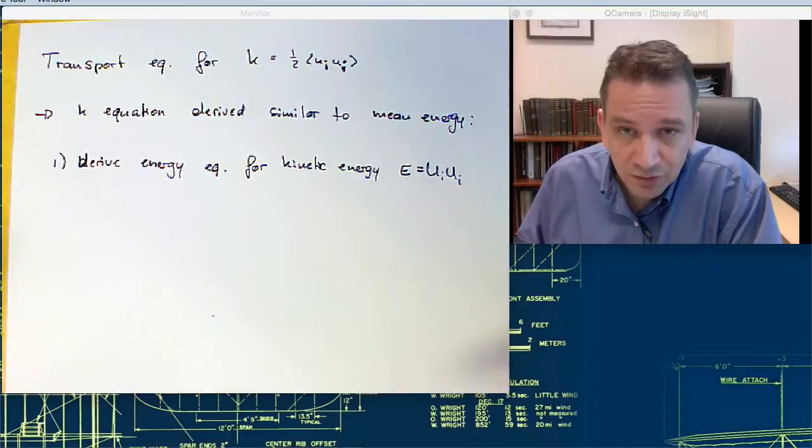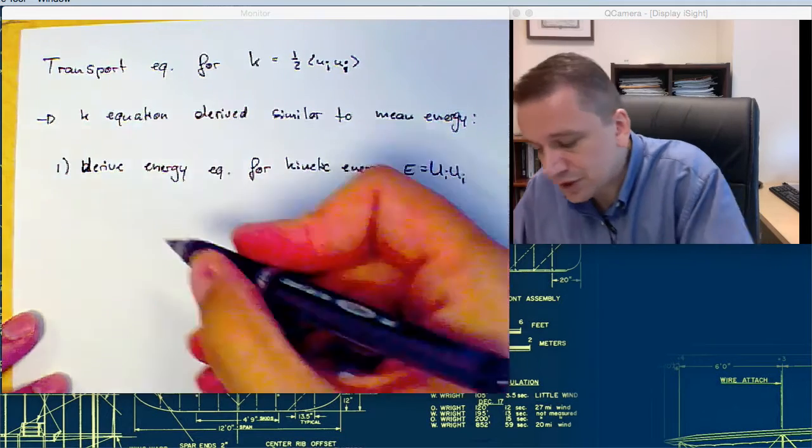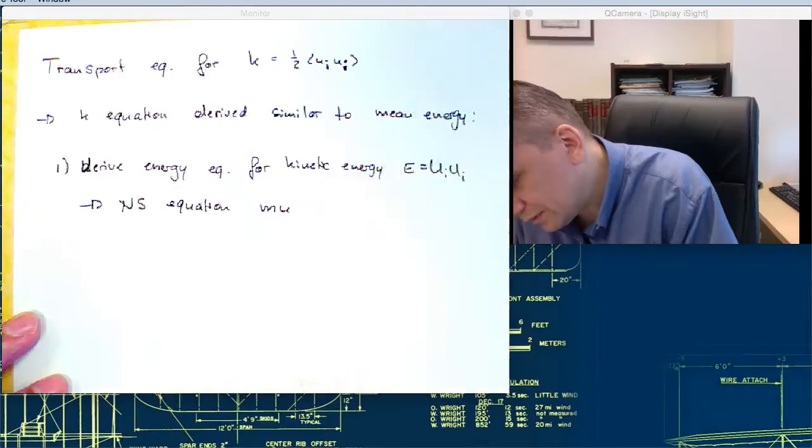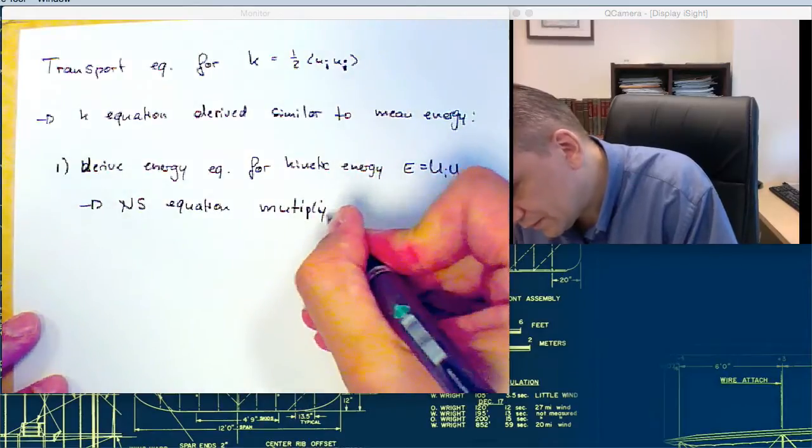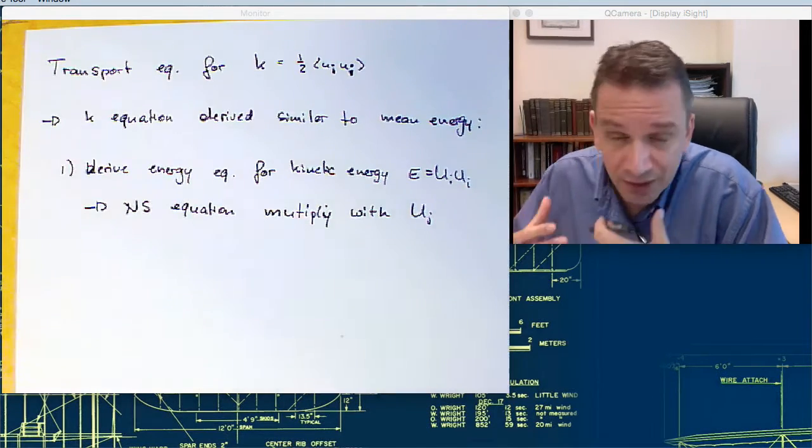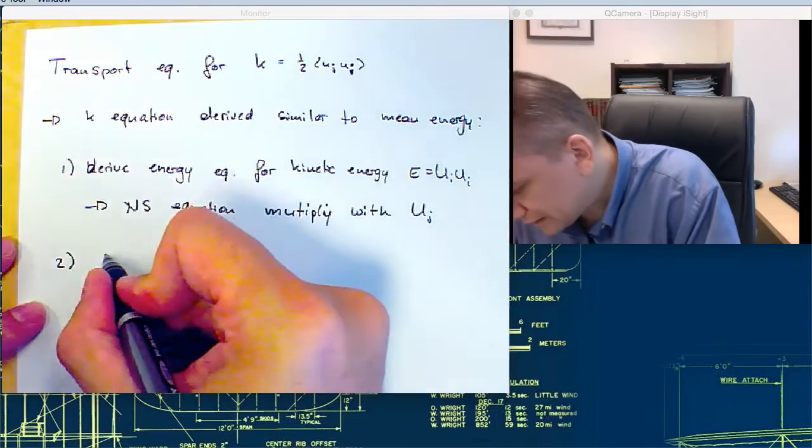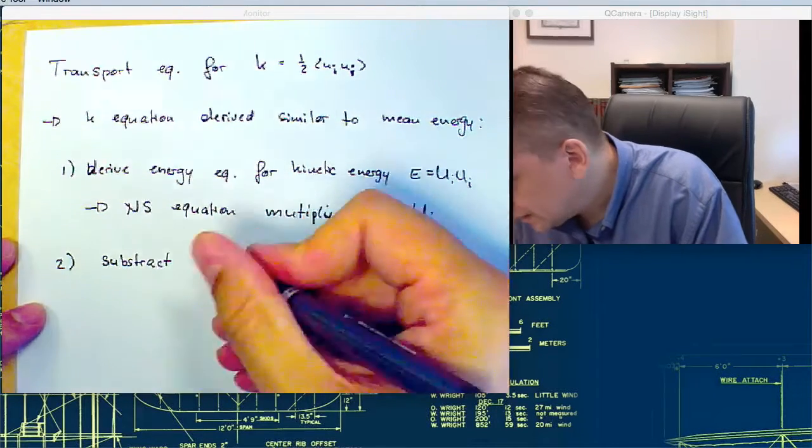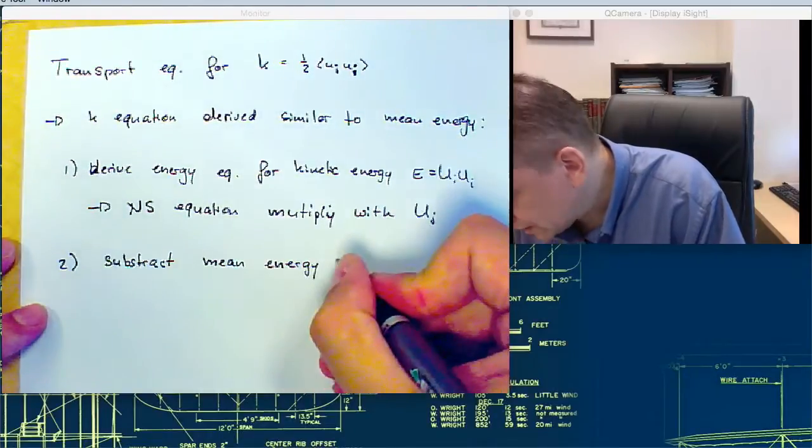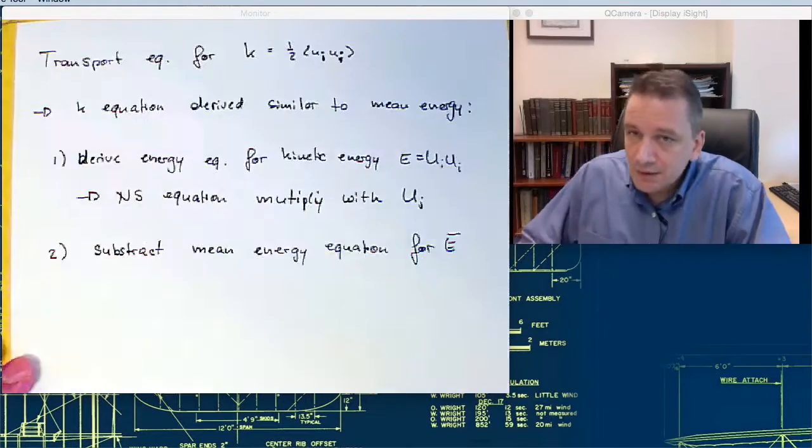And we were using the RANS equation to derive that. But if you start from the Navier-Stokes equation and do the same thing, you're just not multiplying now with ui, but with uj. So you start with a Navier-Stokes equation and you multiply with uj, without any averaging applied. Then you obtain an energy equation for the entire flow field. And then, what you do then, you subtract mean energy equation for E.